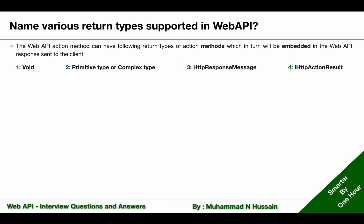The first return type is void. The second one is a primitive type or complex type. Third, we can return an HTTP response message. And fourth, we can return IHttpActionResult.